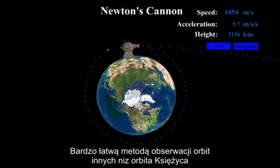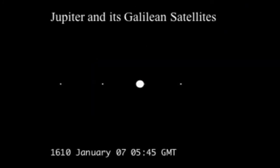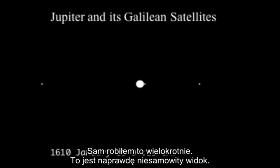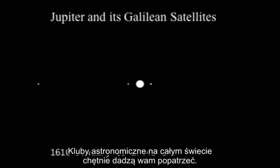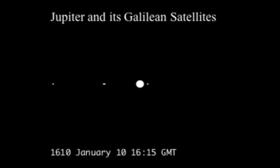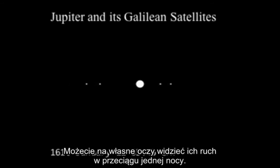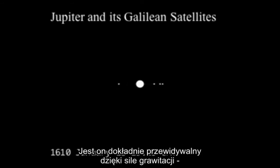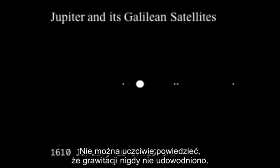A very easy way to observe orbits other than our own moon is to look at the moons of Jupiter through a telescope. The four biggest moons of Jupiter orbit the planet in a short amount of time and you can actually see their movements within a single night. Their movements are exactly predicted by the force of gravity — the same force that keeps our moon in orbit around the earth. You really cannot honestly say gravity has never been proven; this sight alone proves it.